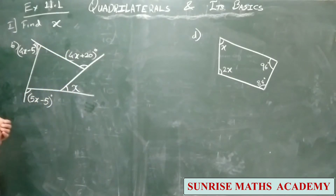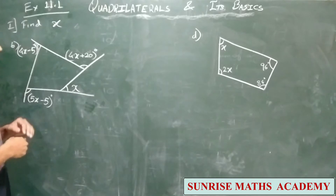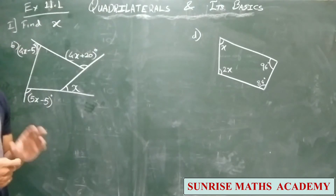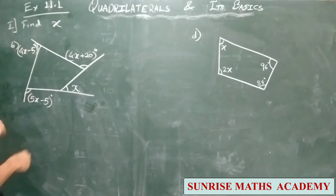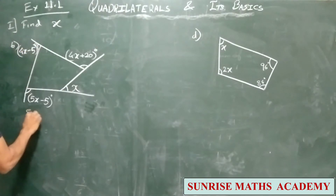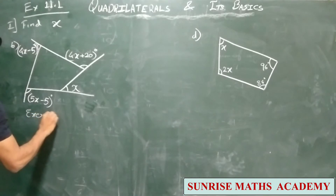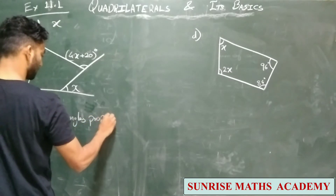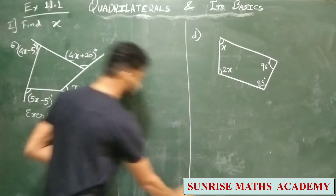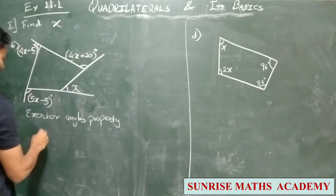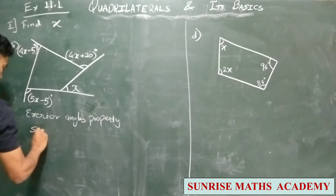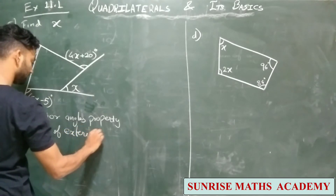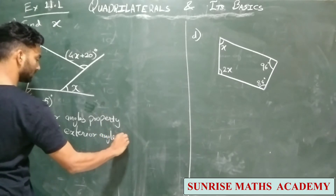All four exterior angles of this quadrilateral are given. Now we have seen the rule or property that the sum of exterior angles is 360 degrees for any polygon. So we will use the exterior angle property.